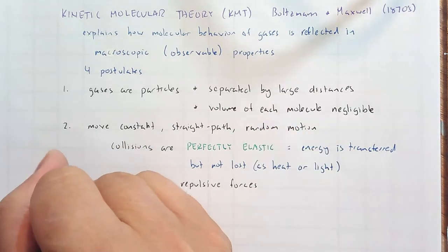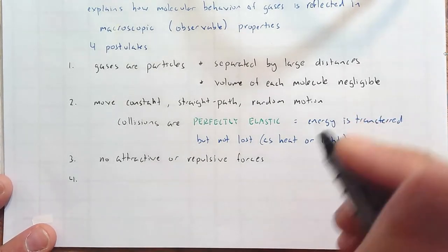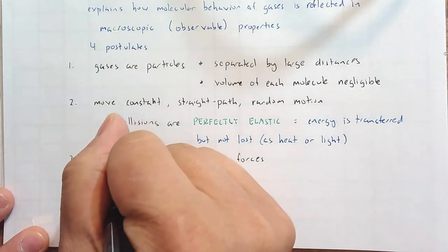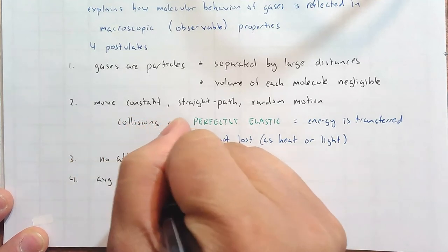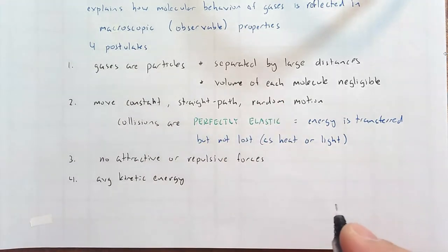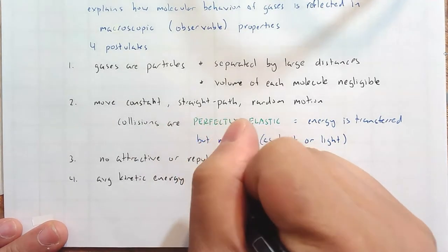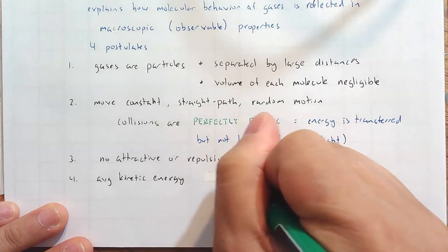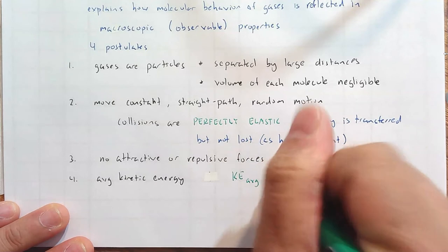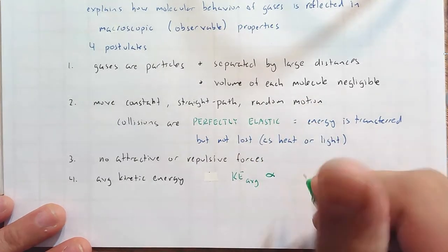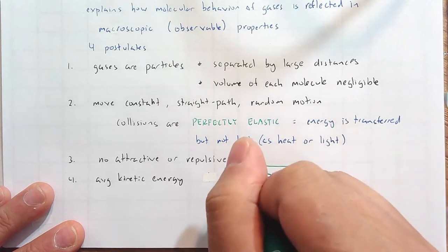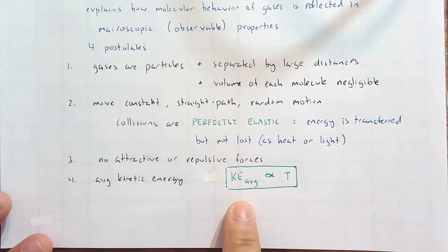And number four, the last one, is we're going to continue talking about it in the next video, and that is the average kinetic energy. Kinetic energy is proportional to the temperature. So the symbol for kinetic energy could be E with a subscript K, but I like to use KE. And I'll put here average. And the sign for proportional is the fish. And T. Kinetic energy does change as temperature changes. The higher the temperature, the higher the average kinetic energy.